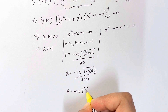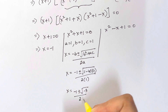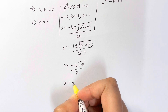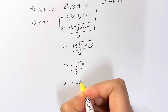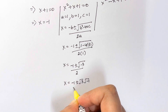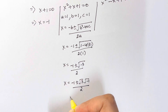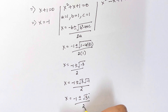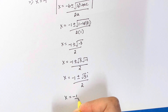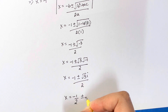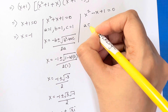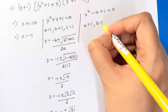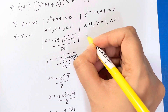This gives x = (-1 ± √(-3)) / 2, which equals (-1 ± √3·√(-1)) / 2. Since √(-1) = i, we get x = (-1 ± √3·i) / 2, written as x = -1/2 ± (√3/2)i.